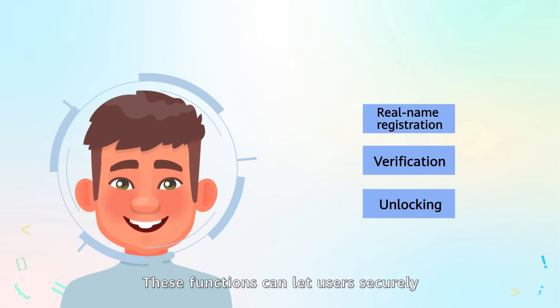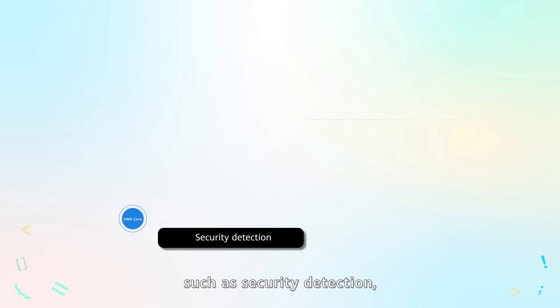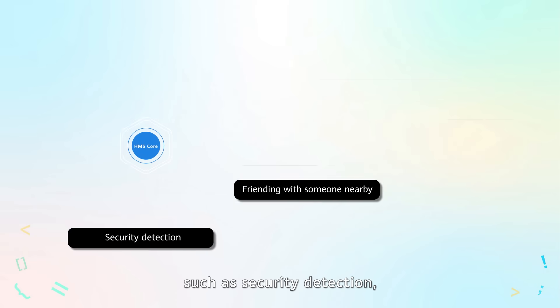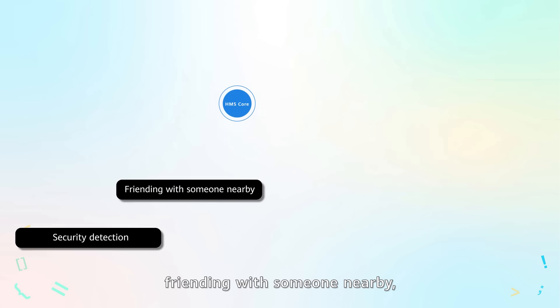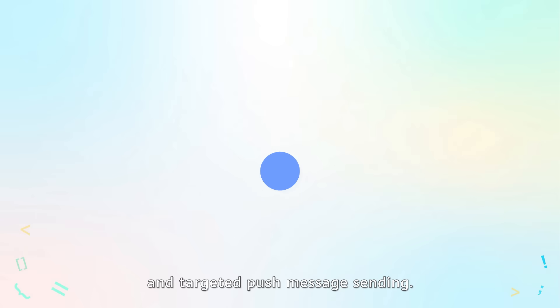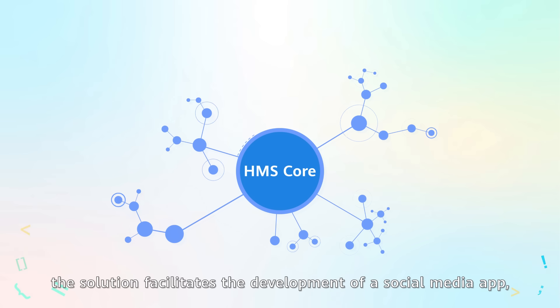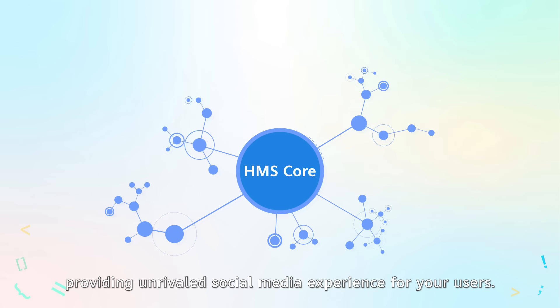These functions can let users securely sign into your app. Last but not least, HMS Core equips your app with even more capabilities, such as security detection, friending with someone nearby, on-cloud backup of chat records, and targeted push message sending. With such capabilities, the solution facilitates the development of a social media app, providing unrivalled social media experience for your users.